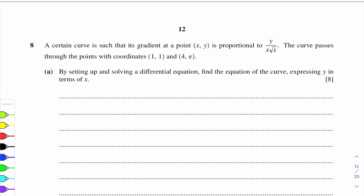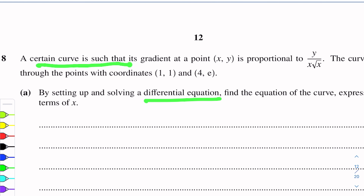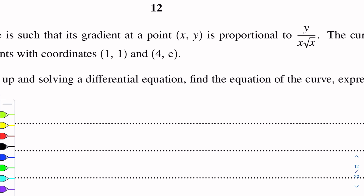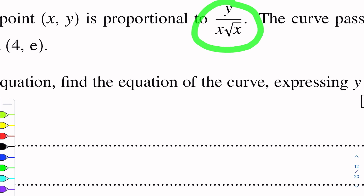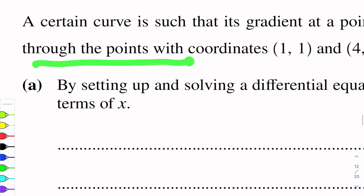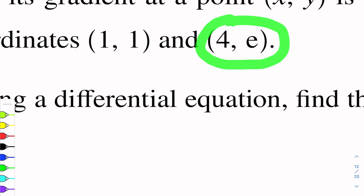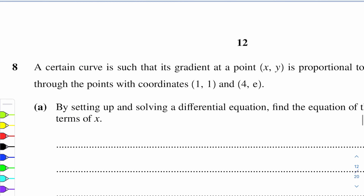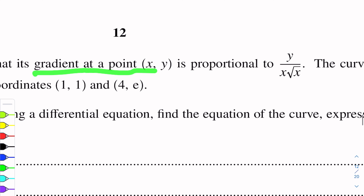Now, we come to question number 8, which is a differential equation. The statement of this question is: a certain curve is such that its gradient at a general point x, y is proportional to y over x into root x. The curve passes through the points with coordinates (1, 1) and (4, e), where e is a specific constant with value approximately 2.718.